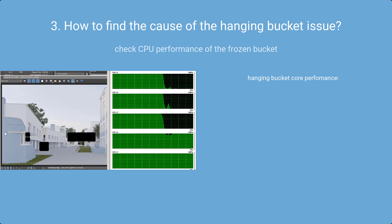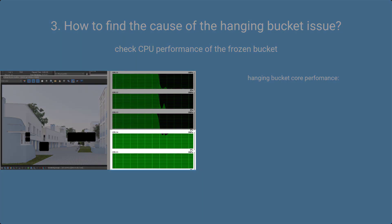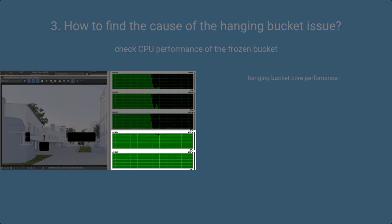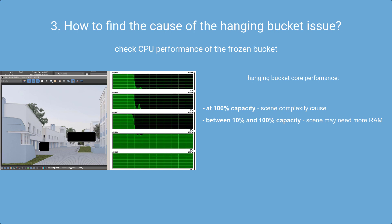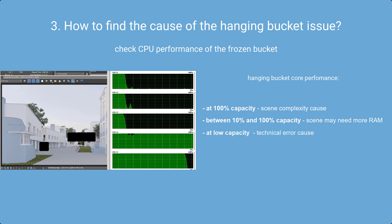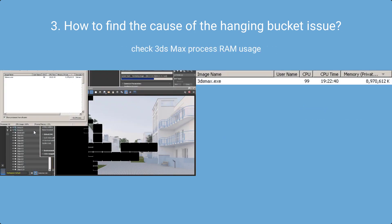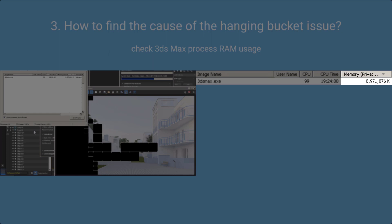To diagnose, check the CPU performance of the cores rendering the frozen bucket. If a core is working at 100% but frozen, it looks like the complexity scenario. If CPU usage is between low and 100%, the scene may need more room to render at full capacity. If the core is idle or at very low usage, there's likely a technical problem. Also check RAM usage — if it's growing, the scene is still rendering; if it's not changing, the buckets are probably frozen for good.